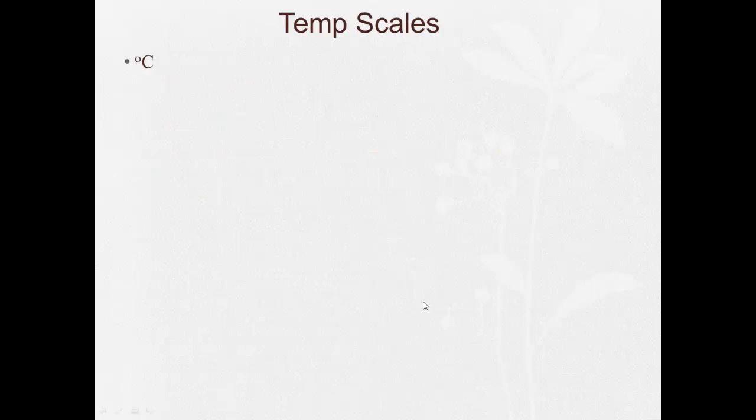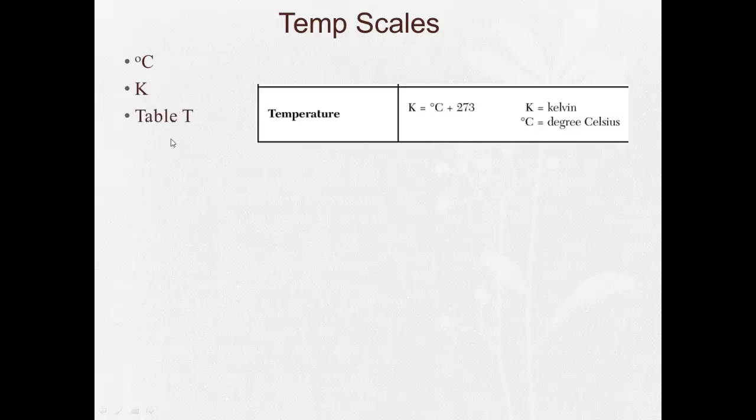Temperature scales. We talked a little bit about these this year. But the main two we're going to use are degrees Celsius and Kelvins. And if you look on table T, it gives you the relationship between them, where Kelvin is degrees Celsius plus 273. And zero degrees Celsius is equal to 273 Kelvins. A hundred degrees Celsius is equal to 373 Kelvins.